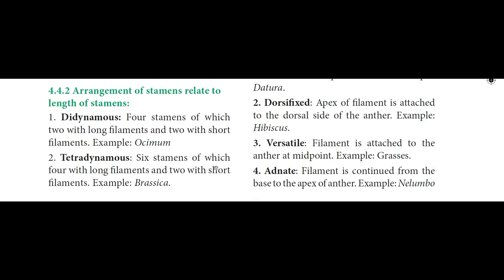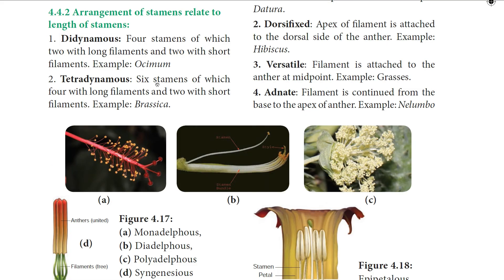Based on arrangement of stamens: Didynamous — four stamens of which two have long filaments and two have short filaments, example: Ocimum. Tetradynamous — out of six stamens, four have long filaments and two have short filaments, example: Brassica. Heterostemonous — stamens are of different lengths within the same flower, example: Cassia.